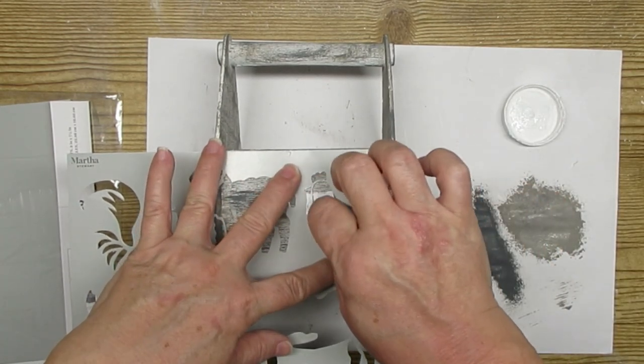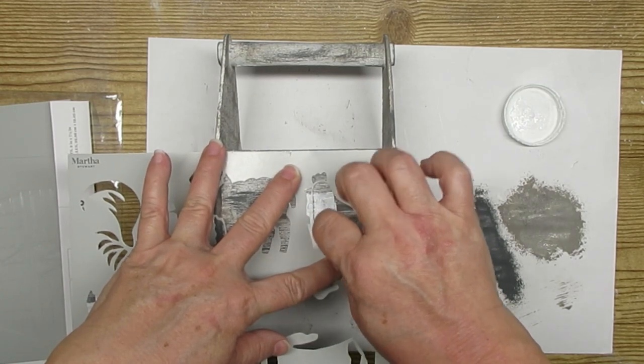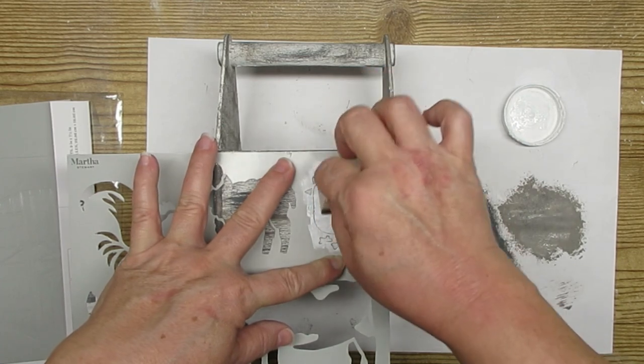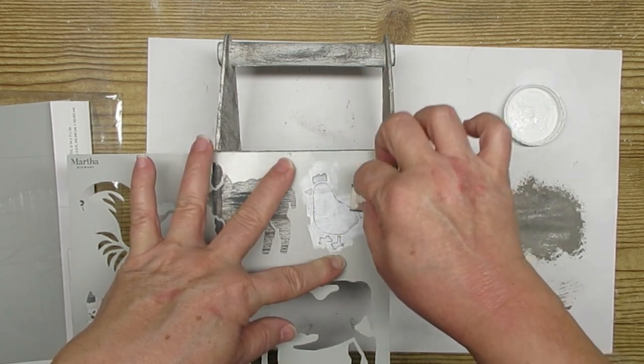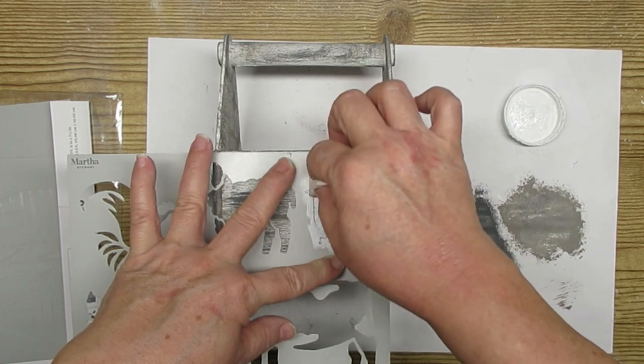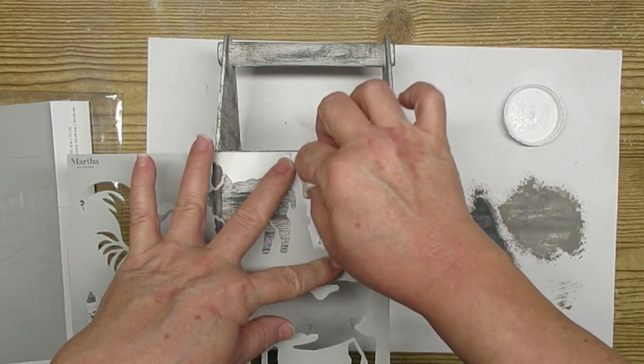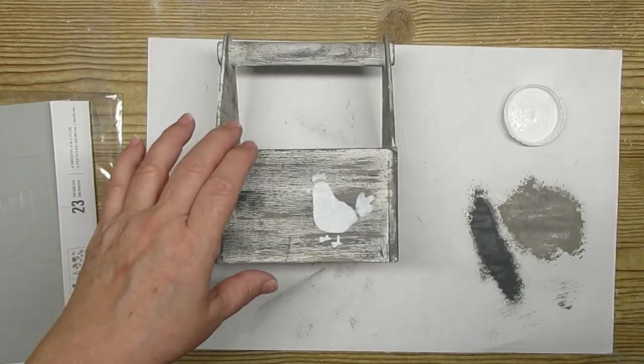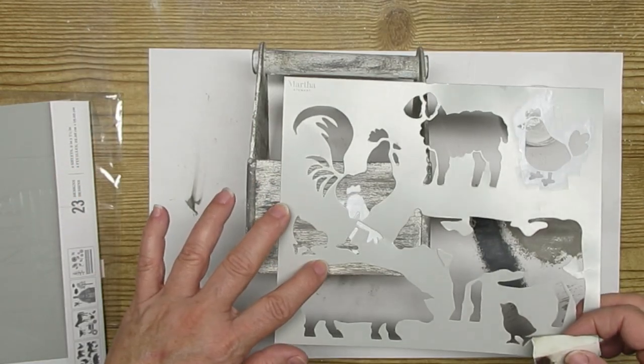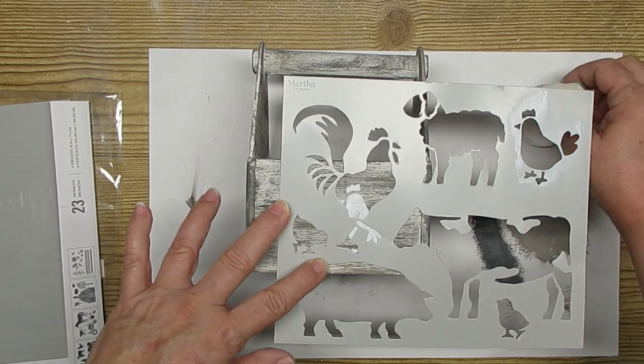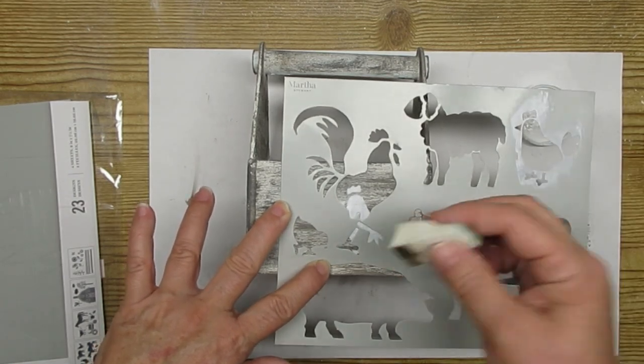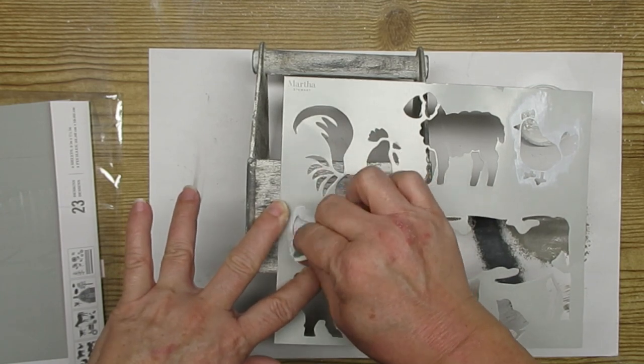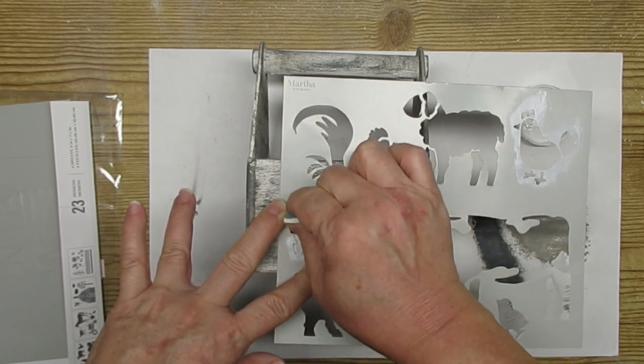These are some self-stick or self-adhesive stencils that I also picked up at Michael's when they had a Martha Stewart clearance. I'm just using some white chalk paint and a makeup sponge and I'm pouncing up and down, making sure I don't have too much paint loaded on the sponge because I don't want anything to bleed. It's always better to do a couple of light coats than one dark coat. These stencils also have a couple of little baby chicks and I thought this one would just be the perfect touch so I'm going to add this one too and then repeat the process on the other side of the crate.